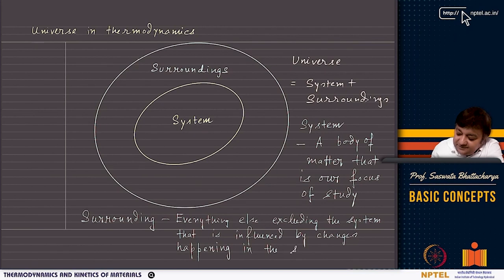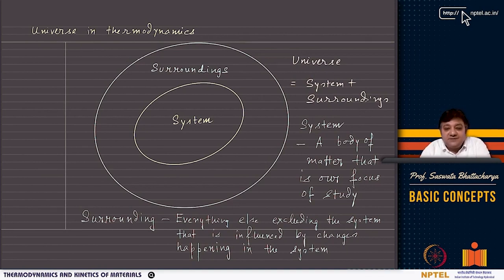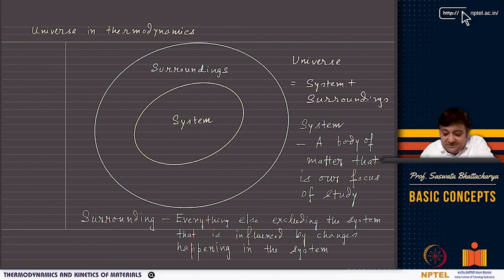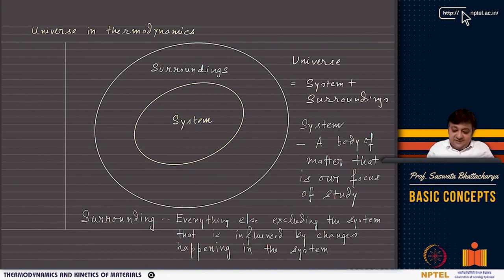The system also influences everything else, and that is called the surroundings — everything excluding the system. So if there are changes happening in the system that affect the surroundings, the surroundings is basically the region of influence for the system. Universe in thermodynamics basically means system and surroundings together. The properties of the universe define the thermodynamic laws.